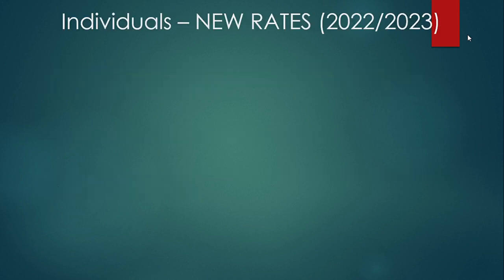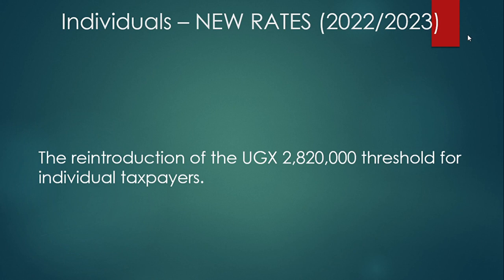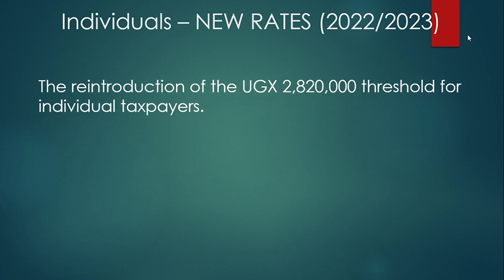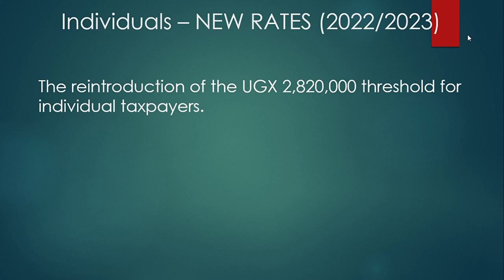Now let's look at the amendments. The new changes affect both categories of taxpayers — individuals and non-individuals. For 2022-2023, we saw the reintroduction of the threshold of two million eight hundred and twenty thousand shillings for individual taxpayers. This is the tax-free amount, meaning it is deducted before any tax rates are applied. This figure comes to two hundred and thirty-five thousand per month, but two million eight hundred and twenty thousand is given as an annual deduction.